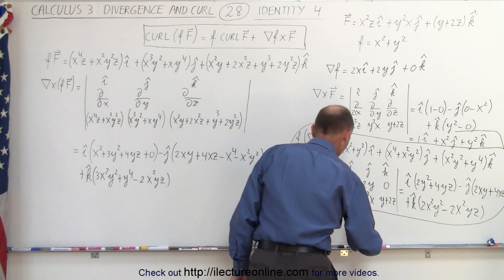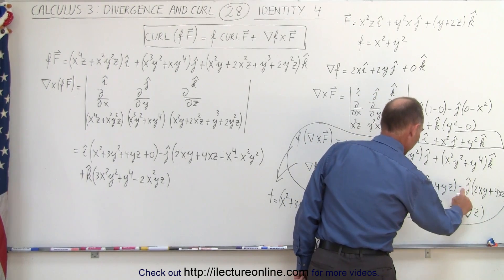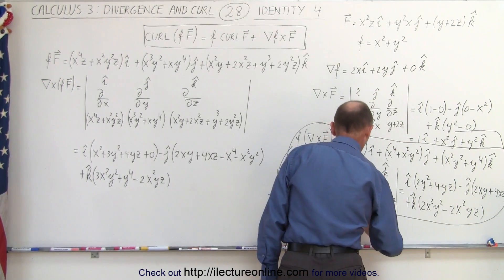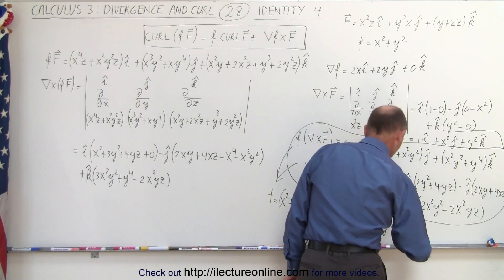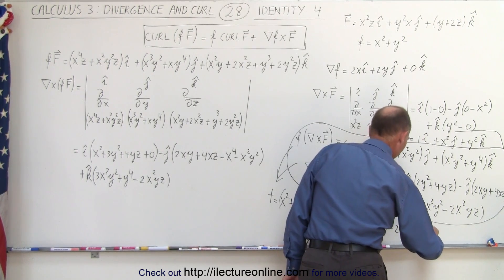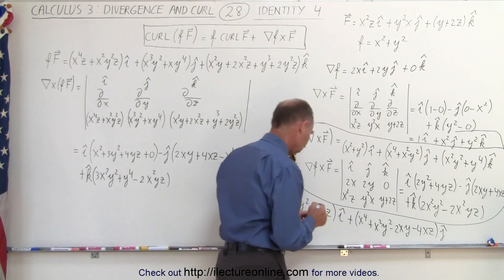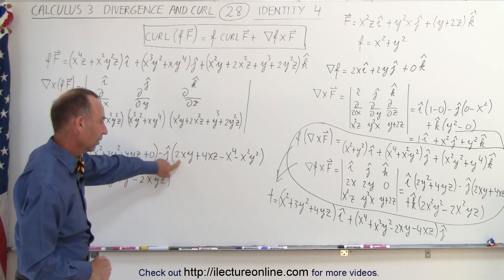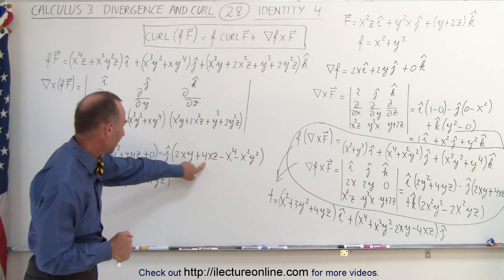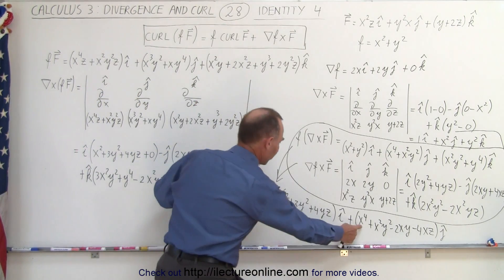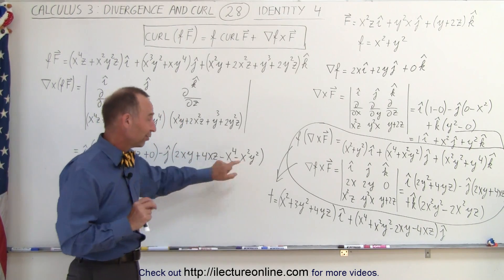Now adding the J components: we have X to the fourth plus X squared Y squared from one term, and minus 2XY minus 4XZ from the other. On the left side: minus 2XY (same), minus 4XZ (same), a minus times minus gives plus X to the fourth (same), and plus X squared Y squared (same). The J components match.